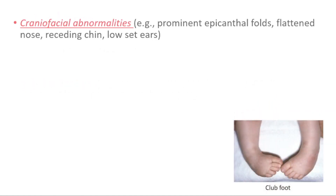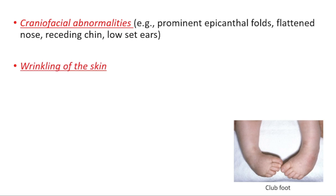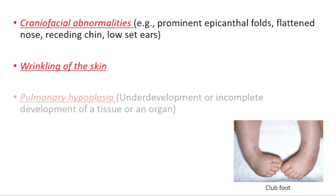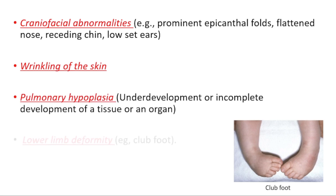Decreased renal output can cause several problems, for example craniofacial abnormalities such as flattened nose, receding chin, or low-set ears. We can also see wrinkling of the skin and pulmonary hypoplasia, which means underdeveloped lungs.